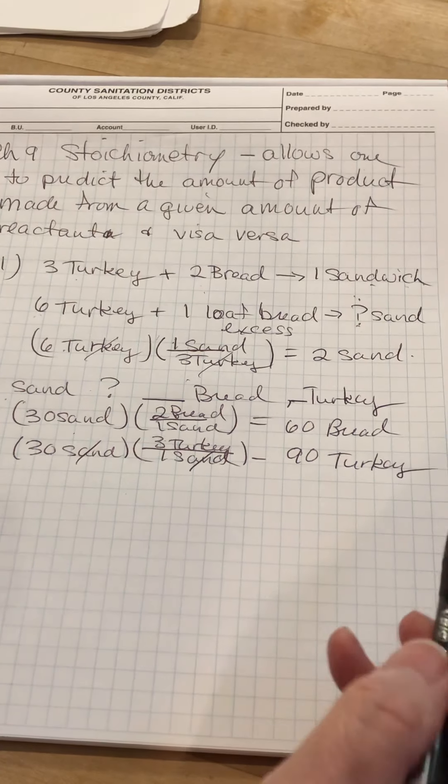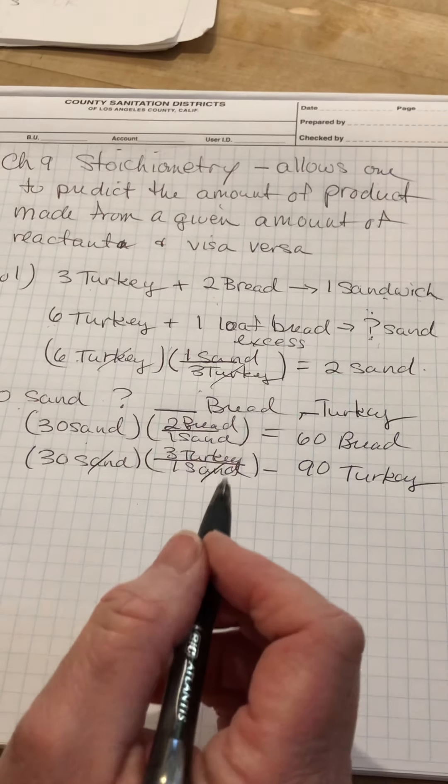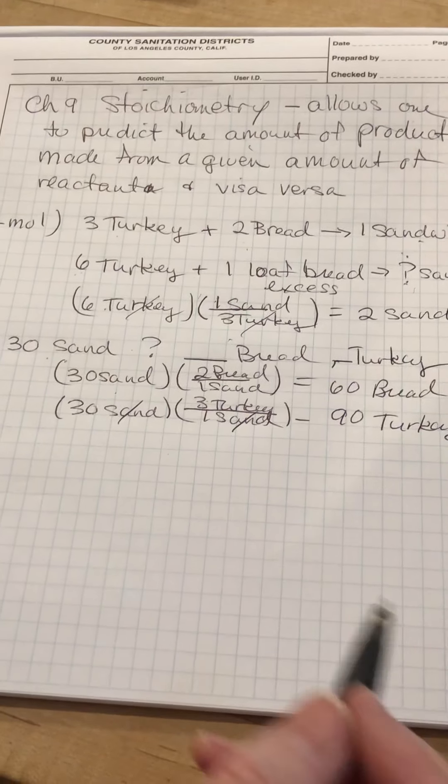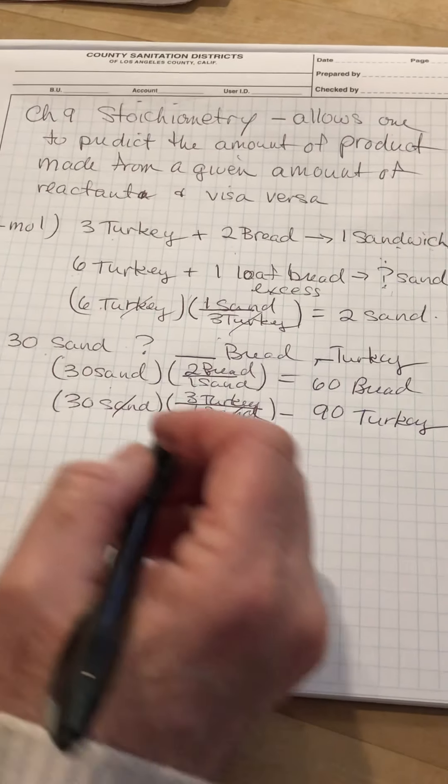Okay, so we've gone from reactant to product, product to reactant. Now we're going to do what's called limiting reactants. And then we've actually finished the chapter in terms of turkey sandwiches.